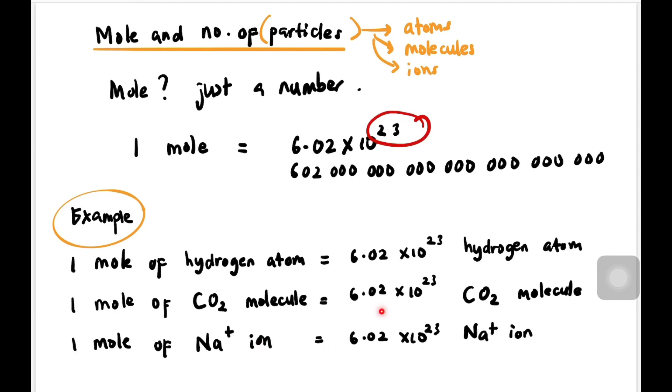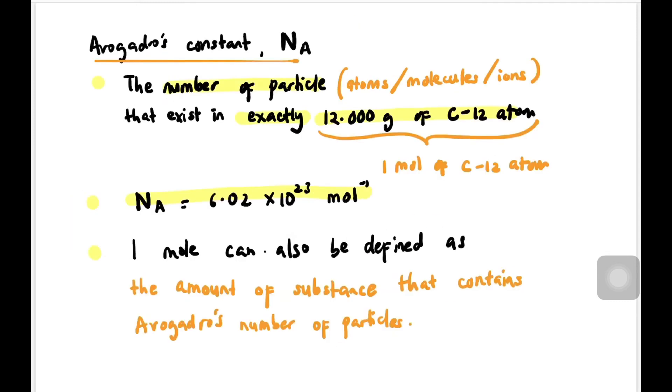So Avogadro's constant, NA, represents the number of particles that exist in exactly 12.00 grams of carbon-12 atom, which is NA = 6.02 × 10²³ per mol. One mole can also be defined as the amount of substance that contains Avogadro's number of particles.